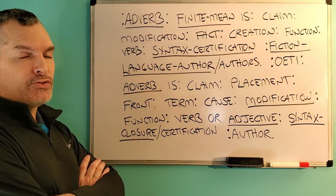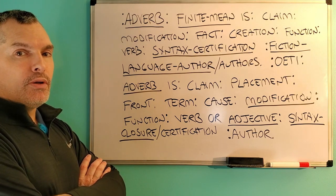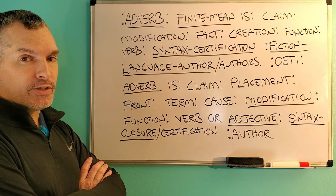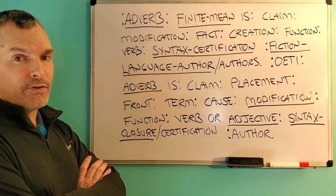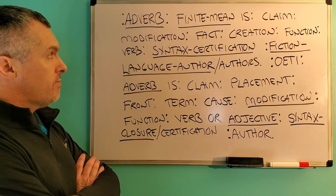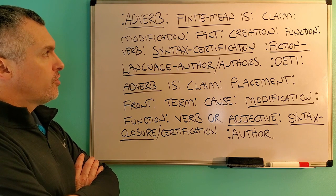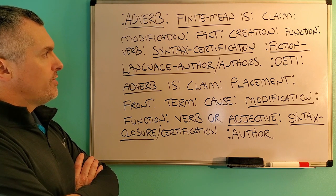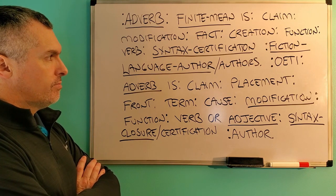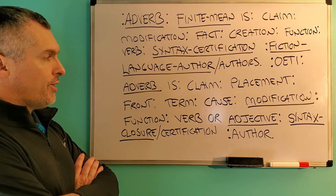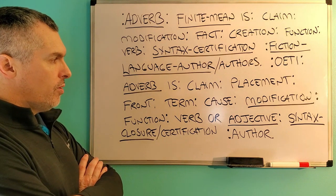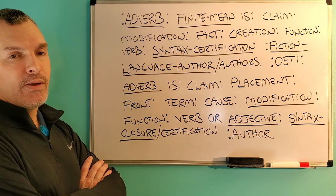For the closure, I'm going to go through each one of those four terms and give you my quantum grammar finite means of those words, taken from the dictionary that governs my construct and my contracts, which I have co-authored as a lexicographer. For the adverb, the finite meaning is: with the claim of the modification, with the fact of the creation, with the function of the verb, with the syntax certification by a fiction language author and authors. For the adverb placement: with the claim of the placement, with the front of a term, with the cause of the modification, with the function of a verb or adjective, with the syntax closure and certification by an author.